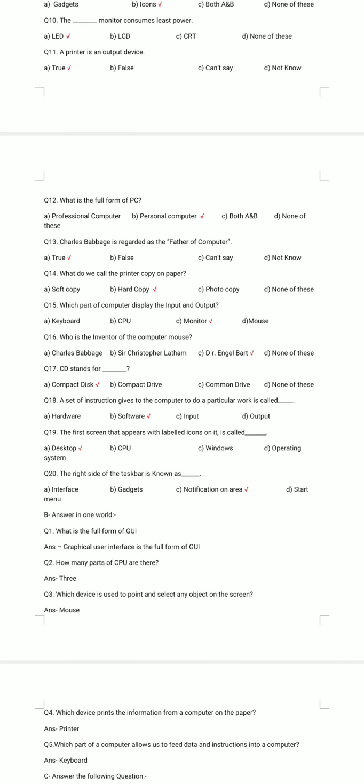Question number 12. What is the full form of PC? A. Professional Computer. B. Personal Computer. C. Both A and B. D. None of these. The correct answer is option B: Personal Computer.